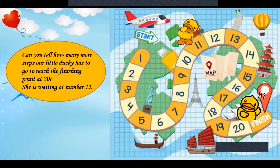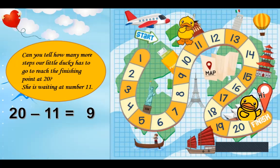11 to 12, 12 to 13, 13 to 14, 14 to 15, 15 to 16, 17, 18, 19, 20. So what is your answer? 20 minus 11 is 9. Yes, we have made 9 jumps forward. So the answer is 9.